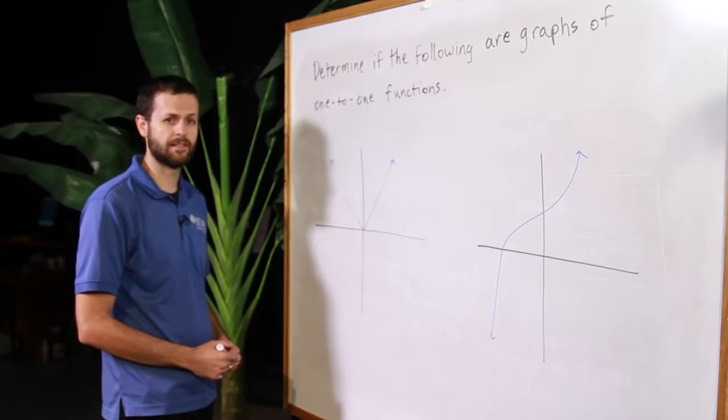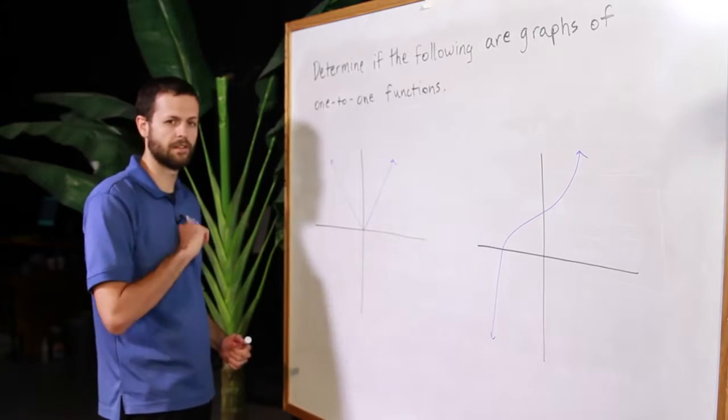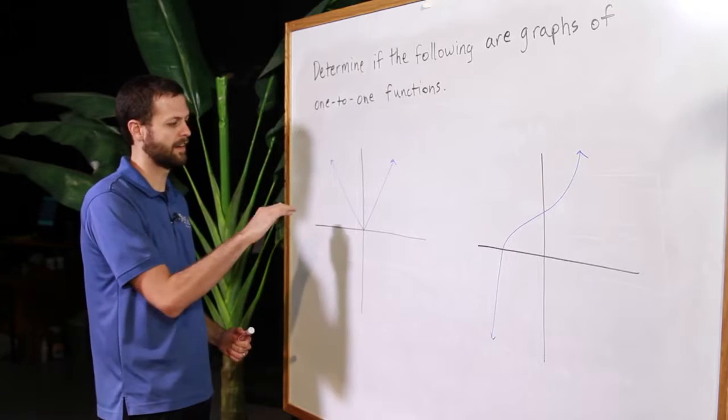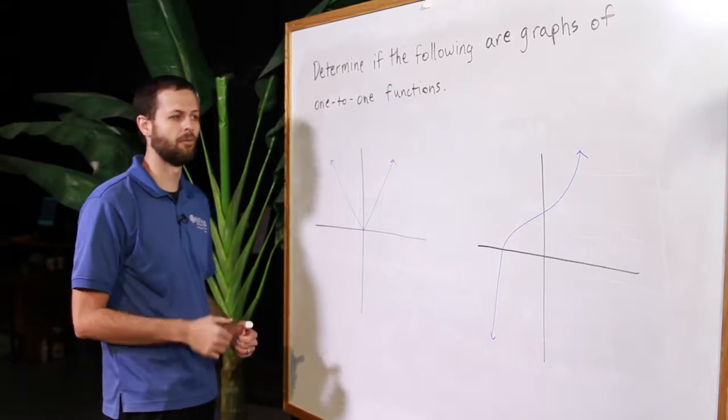Remember that the horizontal line test says that if I can draw a horizontal line through the function graph and it crosses more than one point, that function is not one-to-one.